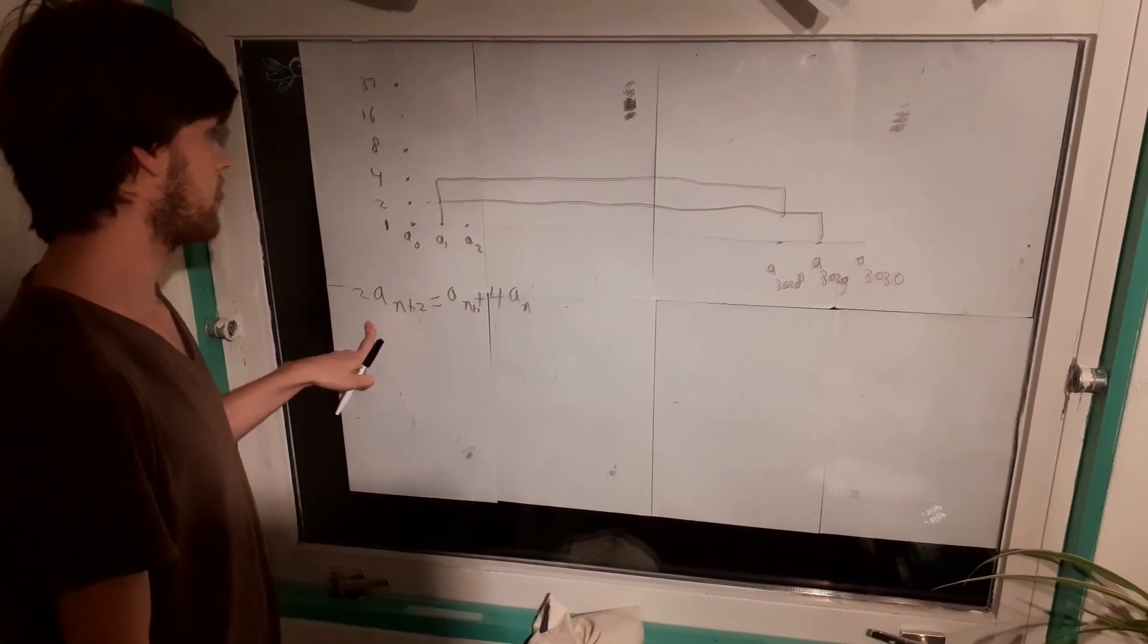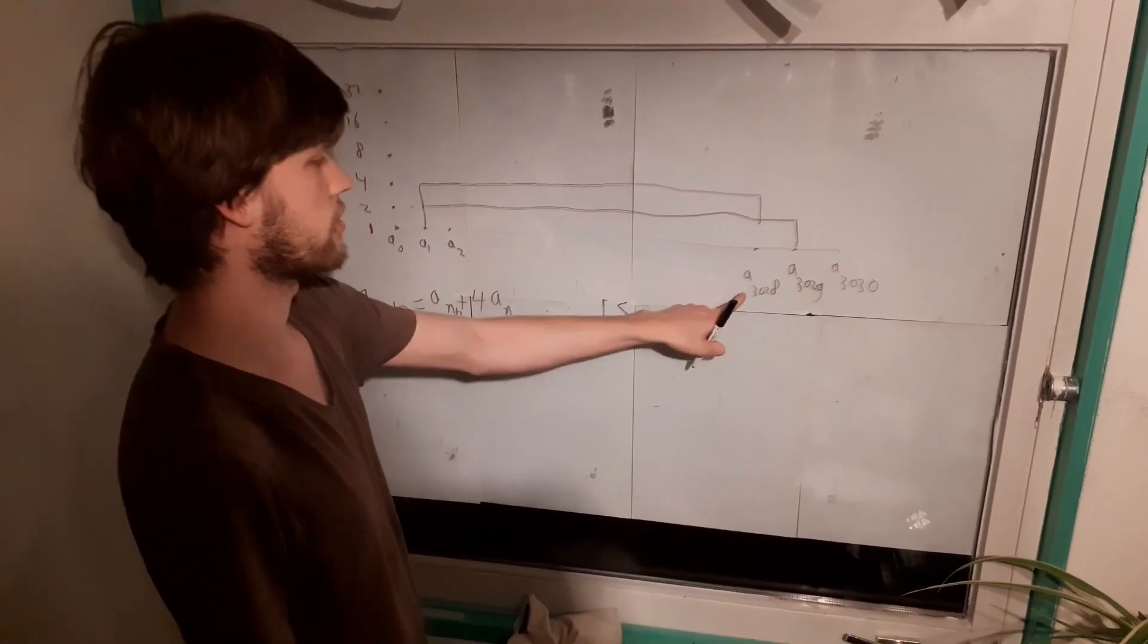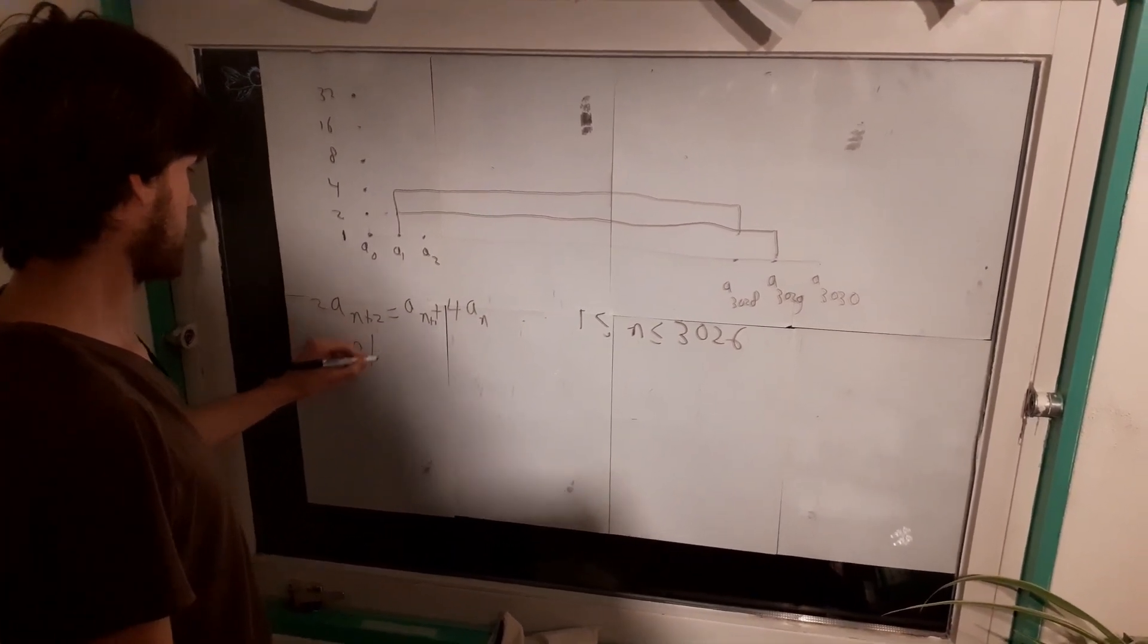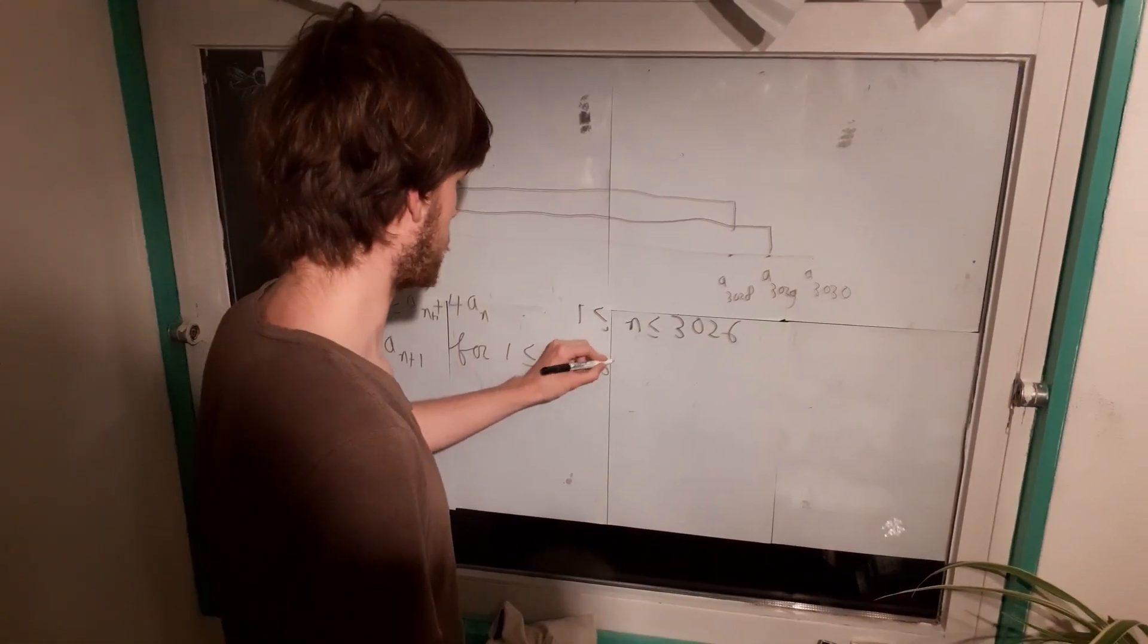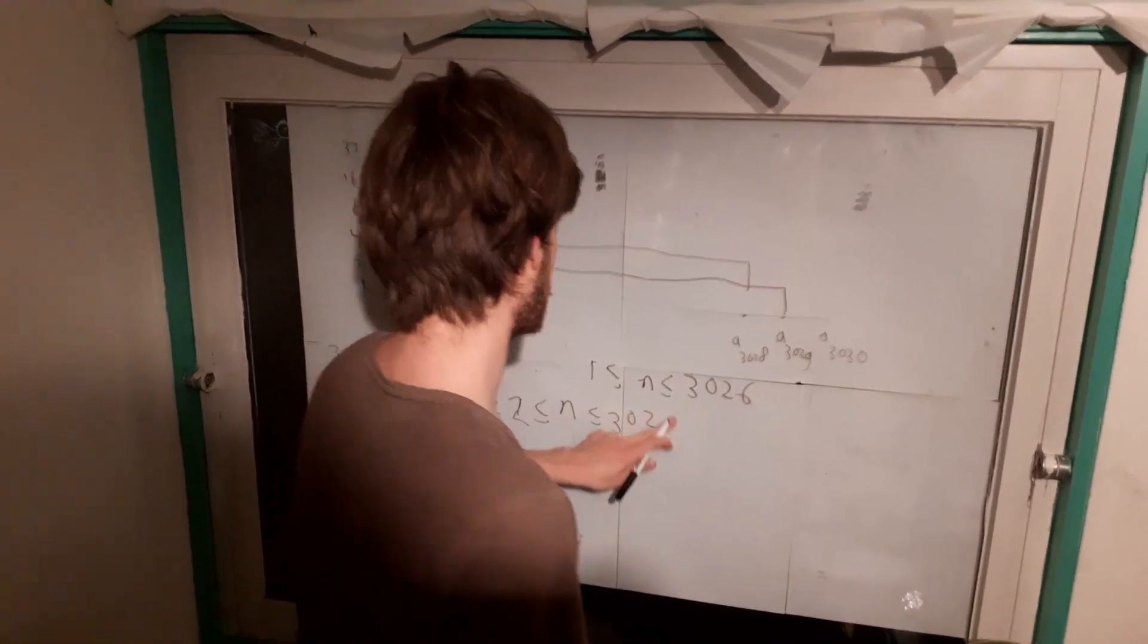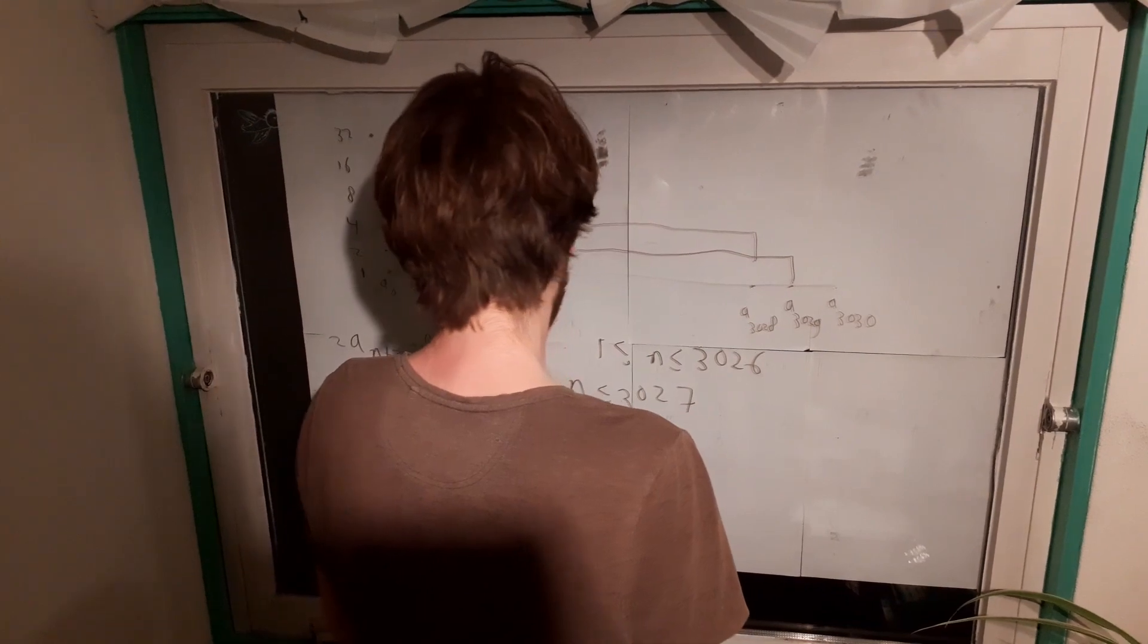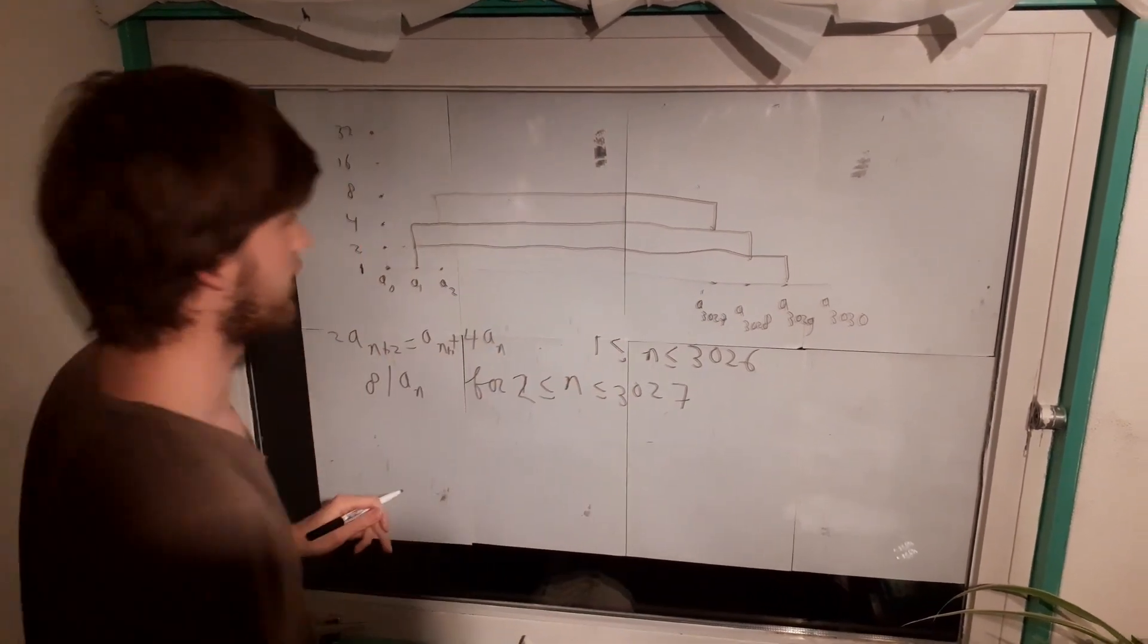2a_{n+2} equals a_n plus 4a_{n+1}. And now we assume that all of these numbers are between 1 and 3028. In that case, these numbers are all divisible by 4. So we can actually see that this left-hand side is divisible by 8. And this term is also divisible by 16, so also by 8. So we have a_n should also be divisible by 8. This is wrong, sorry. a_{n+1} should also be divisible by 8. And this is for n between 1 and 3028.